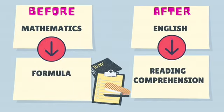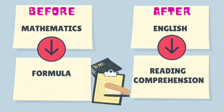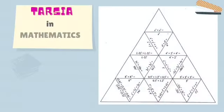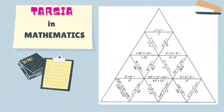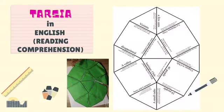Before, Tarsia was used in mathematics to store formulas. After, the innovation lies in using it in the English subject to teach reading comprehension. This is Tarsia in mathematics — as you can see, all the formulas are stored inside the jigsaw puzzle. And this is Tarsia in English Reading Comprehension, where you can see the questions and answers.